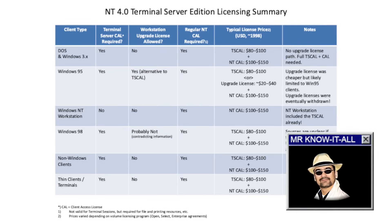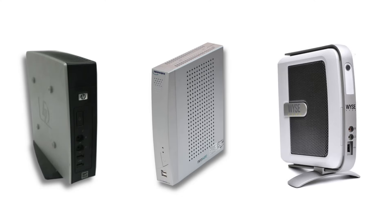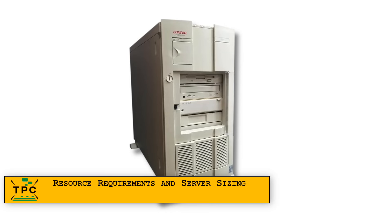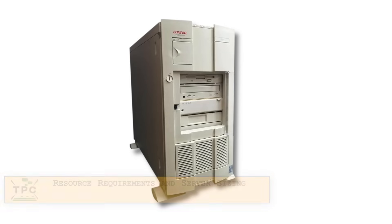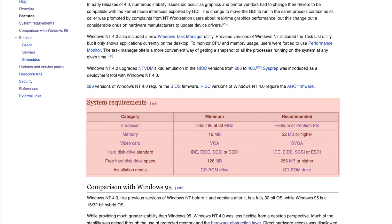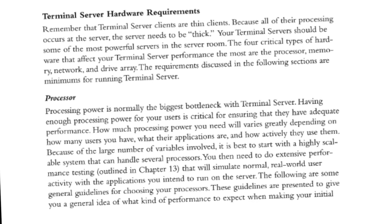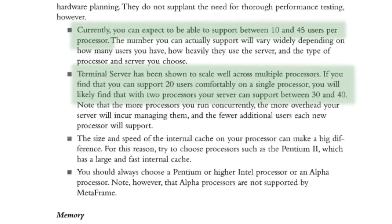Even with pricing variability depending on your licensing program, one thing is clear: it wasn't cheap. Still, many companies justified the extra cost by using inexpensive thin clients over full-blown PCs, recouping the licensing overhead in client-side hardware savings. On the other hand, the servers had to be really beefed up to support a reasonable number of concurrent users. NT 4.0 TSE was definitely a departure from the minimum system requirements of NT 4.0, asking far more than just the minimum 486 CPU with 16 to 24 MB of RAM. Typically, machines running NT Terminal Server would require a dual CPU configuration and a much higher amount of RAM.